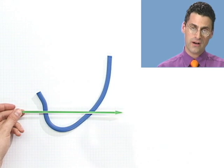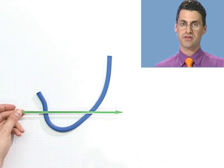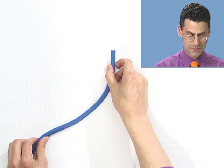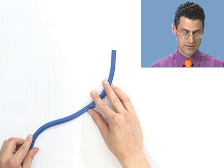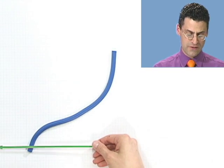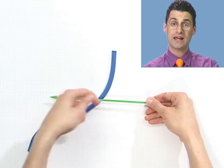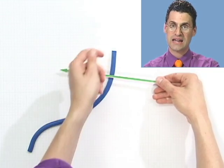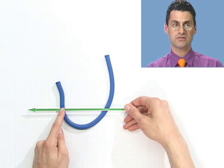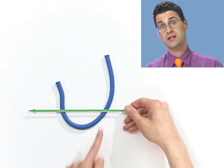So here's an example of a function that does not have an inverse. Here's an example of a function that does have an inverse because no matter what y value you give me, it always came from exactly one unique x value so I can decode. I can decode. I can decode. I can't decode here because do I decode to here or do I decode to here?